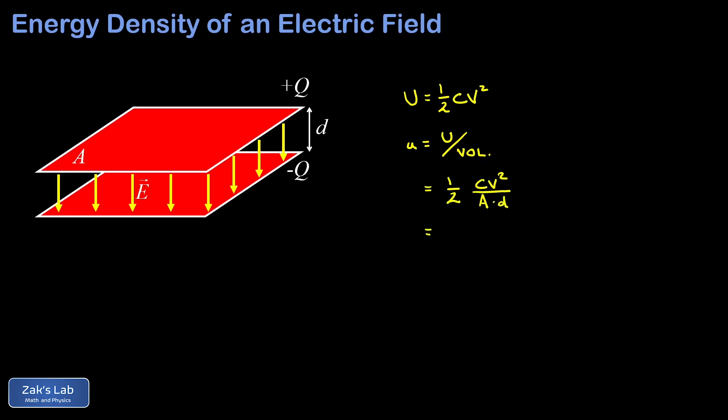Now we can plug in our formula for how capacitance depends on the geometry of the capacitor. I'll post a link to where this was derived, but we recall that the capacitance is given by epsilon zero A over d. So that replaces the C and then we still have V squared, the potential difference squared over A times d.